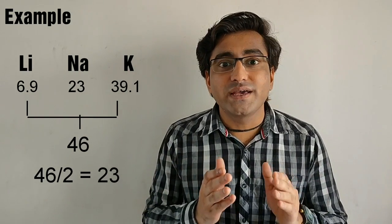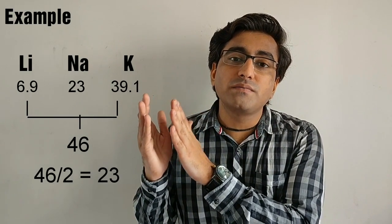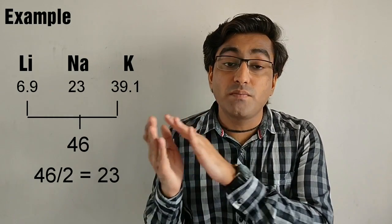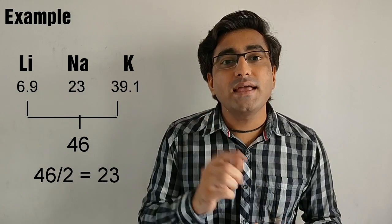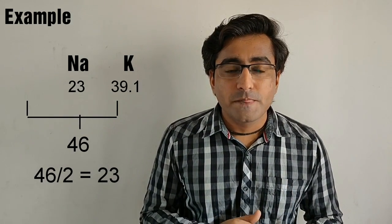In this example we can see that the mean and the mass of the middle element are both equal, and hence this triad obeys the law. So we can conclude that in order to obey the law, the mass of the middle element and the mean of the first and the third element should be equal or approximately equal.